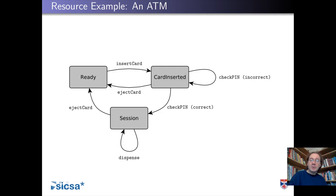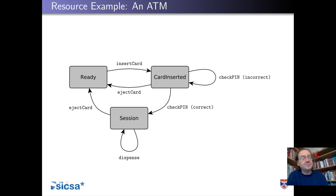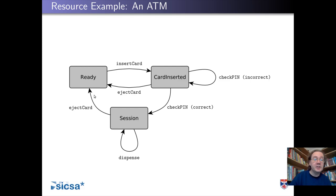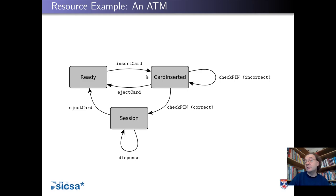A more exciting thing we can do — and linearity is quite exciting — is that it gives us the ability to talk about protocols. So here's an example protocol that you'll all be familiar with: going to an ATM, putting in your bank card, entering your PIN, getting out some cash. There are security properties here — we want to make sure you only get the cash when you're in a validated state. We've got a state machine: the ready state is the ATM waiting for you to insert your card; we move to the card-inserted state; we only get to the validated session state if your PIN has been checked and is correct. Using linearity, we can turn that into an API that we can program against.